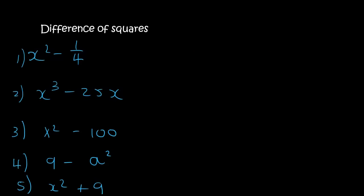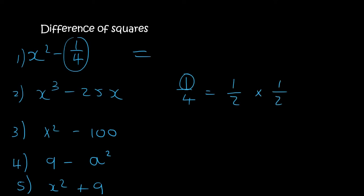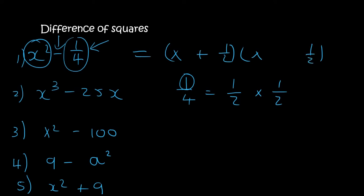You can pause the video and try these. With number 1, people often get panicky when there's a fraction, but please do not stress. A quarter is the same as a half times a half, because 1 is 1 times 1 and 4 is 2 times 2. So x squared minus a quarter has two terms, both are square numbers, with a minus between them. We open two brackets and write x, x, half, half — one with a plus and one with a minus.